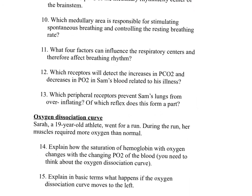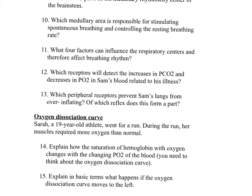Number twelve: which receptors will detect the increases in PCO2 and decreases in PO2 in Sam's blood related to his illness? Both peripheral and central chemoreceptors will detect changes in PCO2 and pH. Only the peripheral chemoreceptors in the carotid body will detect changes in PO2. Both types of receptors will send excitatory signals to the inspiratory center — the dorsal respiratory group.